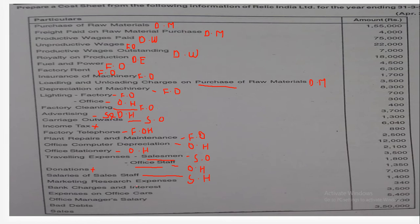Marketing research expenses — you need to do research regarding marketing activity, whether your product is being accepted by consumers or not — so this is part of selling overheads. Bank charges and interest are financial in nature, so they will not form part of the cost sheet. Expenses on office car will form part of office overheads, and office manager salary is again related with office overheads.